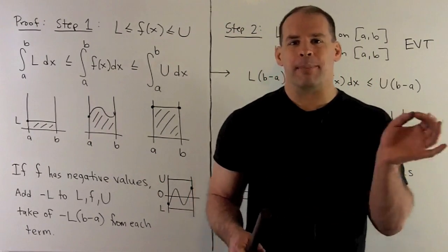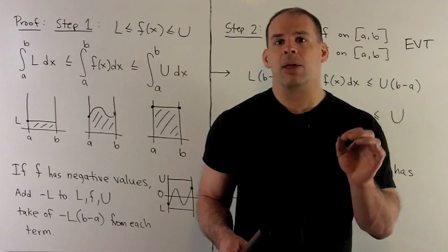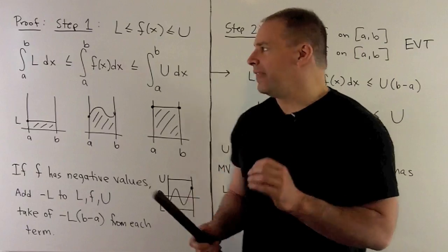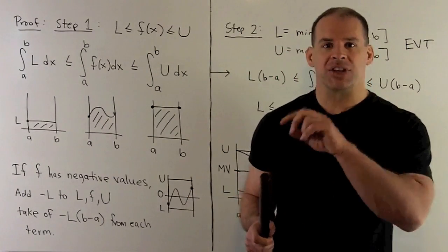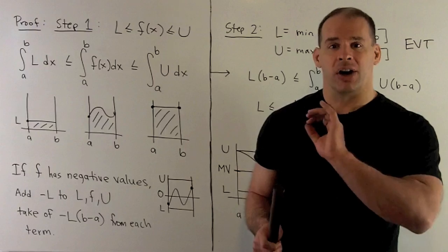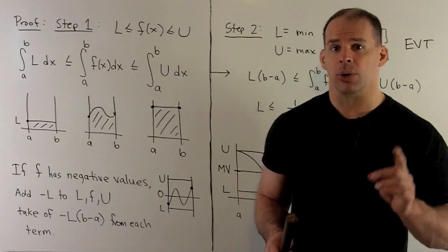Now, we could take that minus L out of the integrand. If you compute that, you get minus L, B minus A. And then each of these terms has a minus L, B minus A on it, which we cancel out, which gives us our inequalities, but with our functions with negative values. So, it still holds.